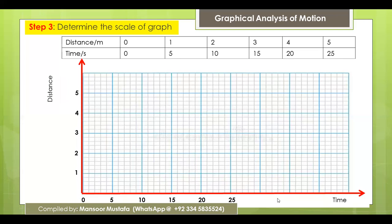For example, on the x-axis, if you assign one division for one second, that must remain consistent. Same for the y-axis — the division must be the same throughout. For instance, if the distance values range from zero to five, you can easily accommodate one meter per five boxes, assigning equal intervals.